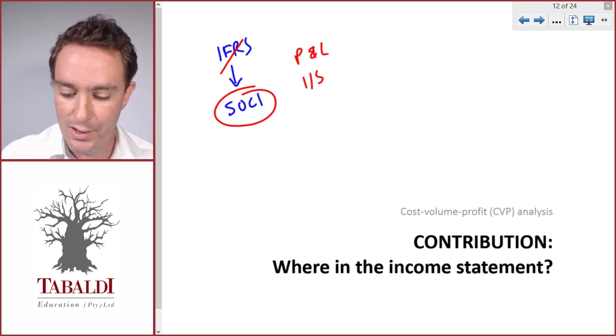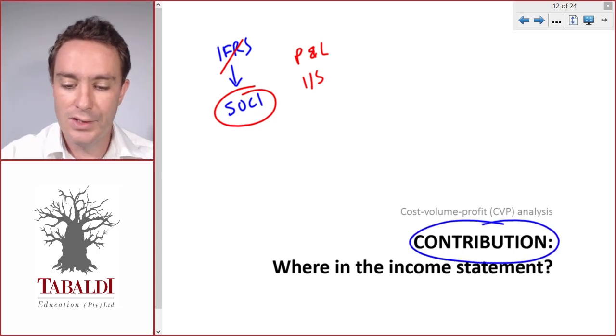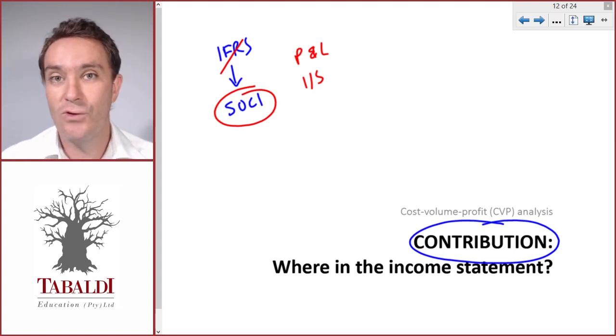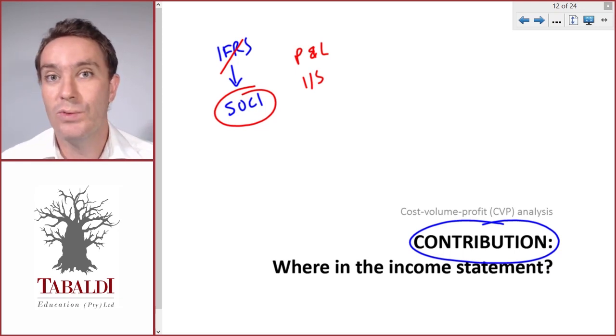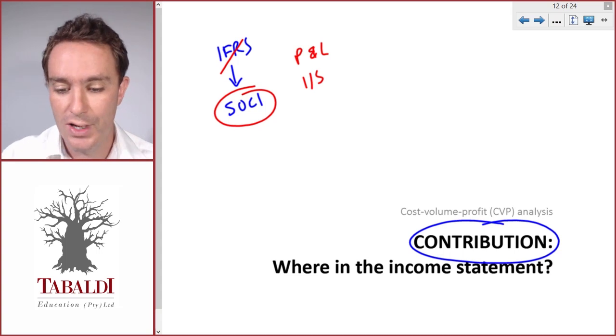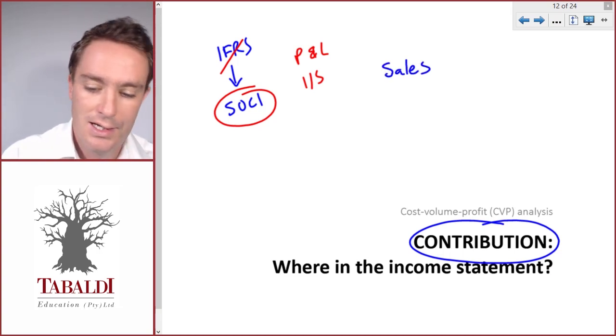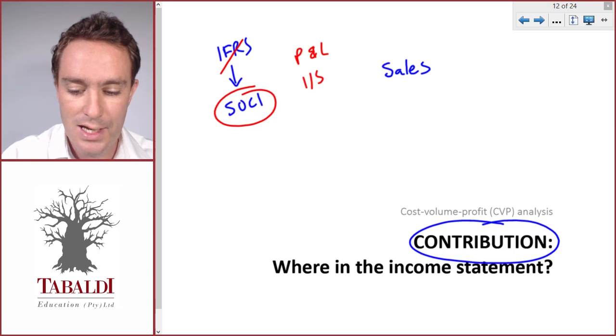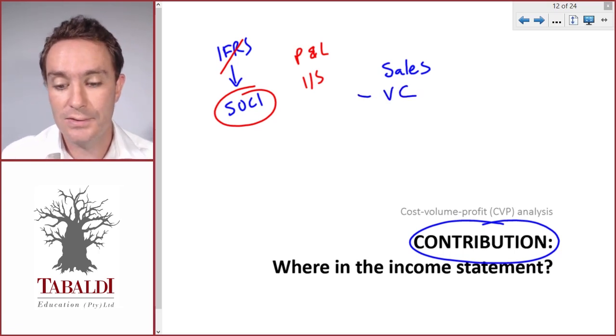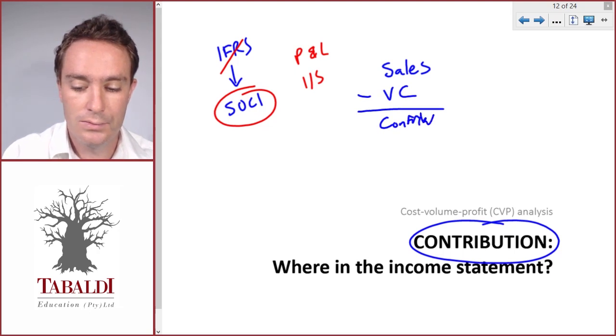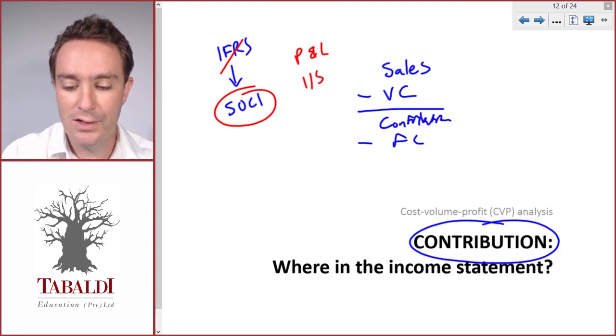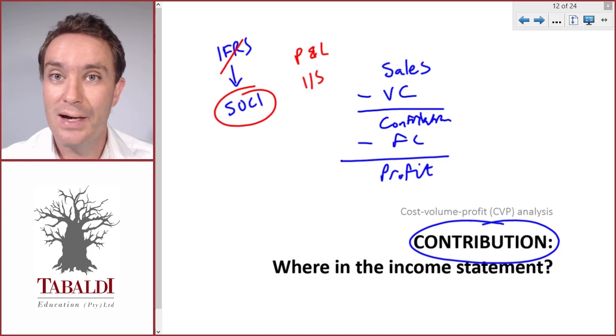Where in the income statement do we find contribution? It's important to realize that for our purposes, for decision-making purposes, we prepare the income statement or calculate profit in any way we like or that's useful for us. We start with Sales, same as any income statement, and we'll first deduct all our variable costs and that will give us Contribution. Then we'll deduct our fixed costs and that will give us Profit.